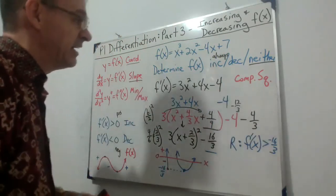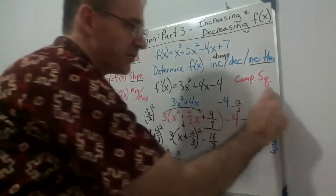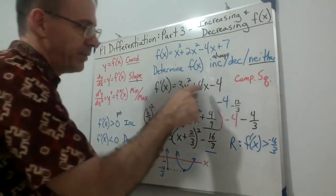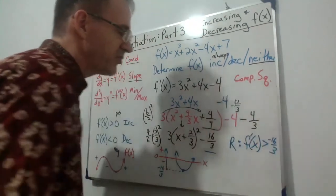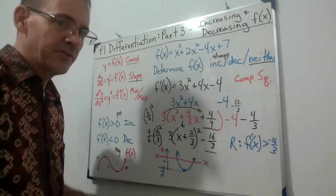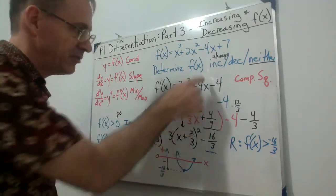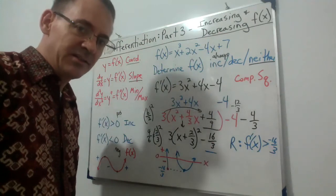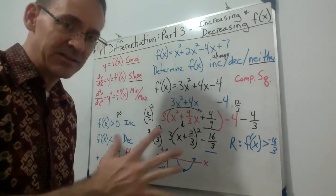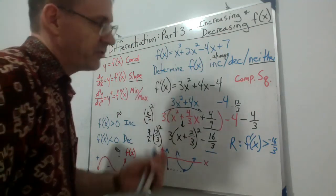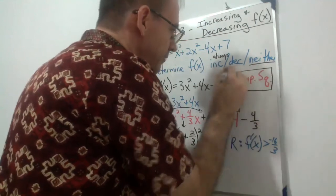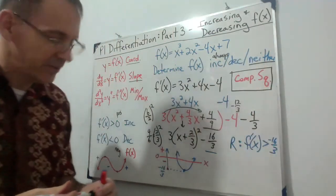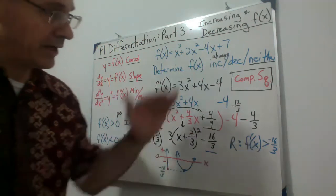So two methods: look at the sign of the squared term vs. the constant, or look at whether the range crosses zero. If the range stays entirely above or below zero, it's always increasing or always decreasing. Write in your notes: for questions about always increasing, always decreasing, or increasing/decreasing/neither — use completing the square.